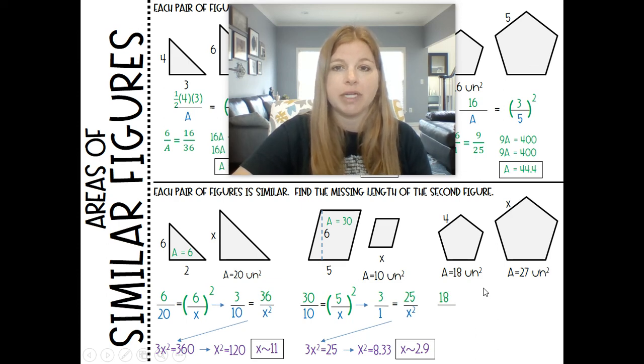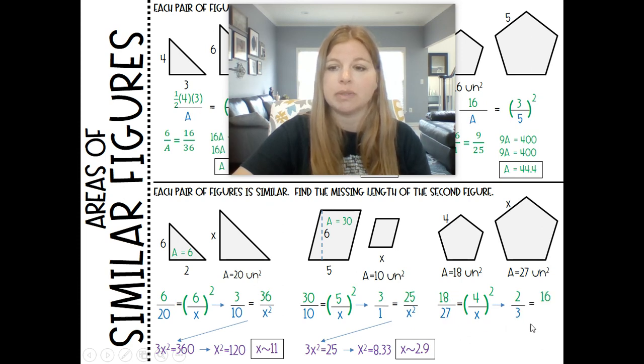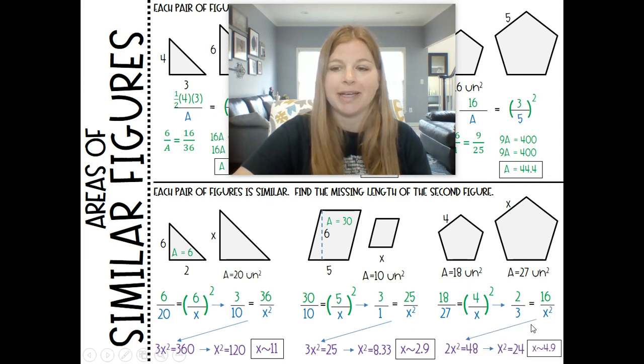Last one here. We set up the ratio of the area. So 18 over 27 is equal to 4 over x squared. That becomes 2 thirds. I'm going to simplify my 18 over 27 to get 2 thirds. Equals 16 over x squared. Cross multiply. Divide by 2. And take my square root.